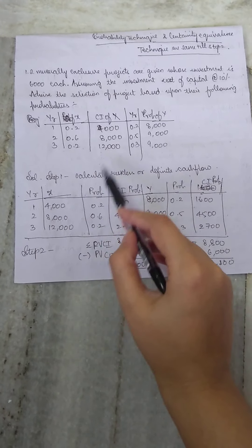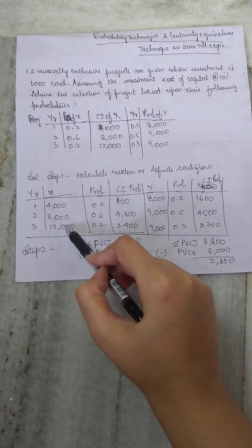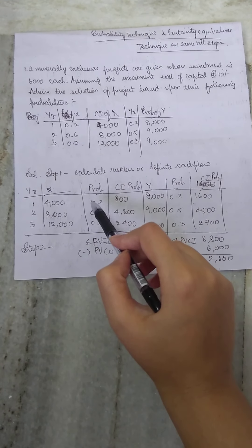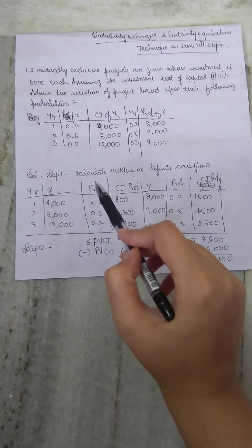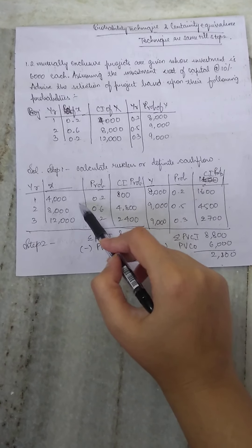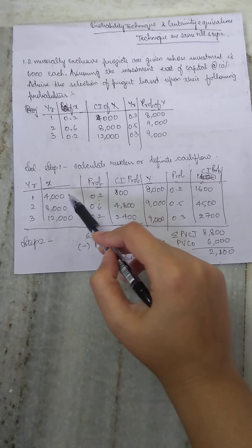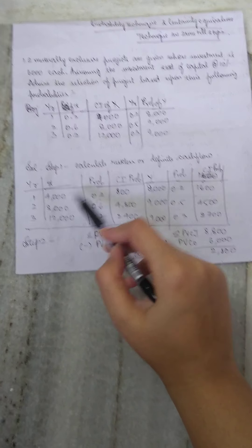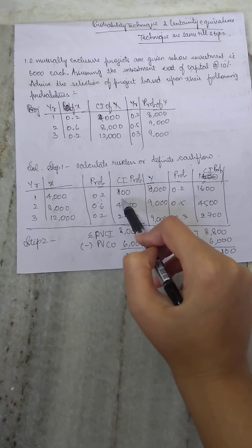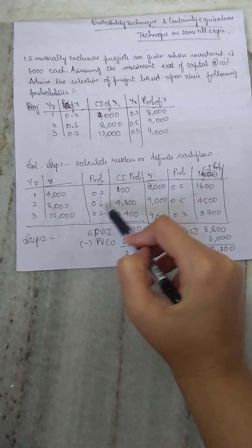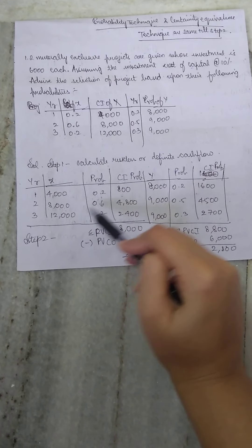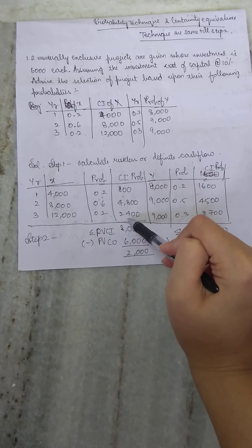First year 4000, second year 8000, 12000. So in the worst scenarios also they promised that in the first year whether they make the profit or they do not make a profit, they will be giving us back 0.2, that is 20% of the investment. Now if you multiply 4000 into 0.2 it is 800, 8000 into 0.6 is 4800, 12000 into 0.2 is 2400.